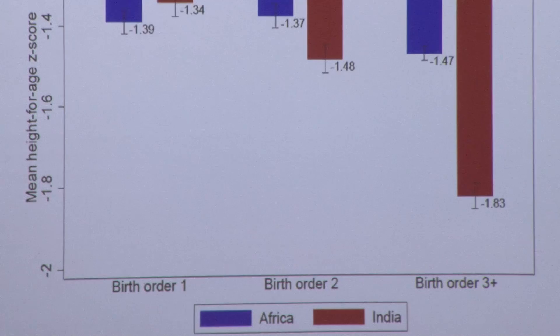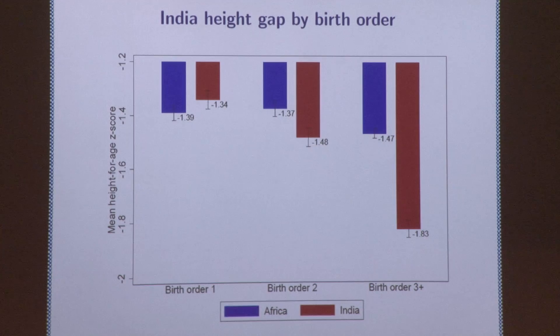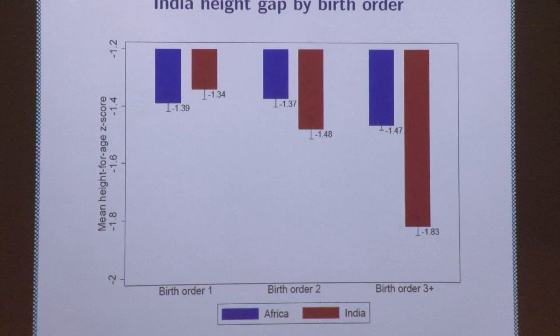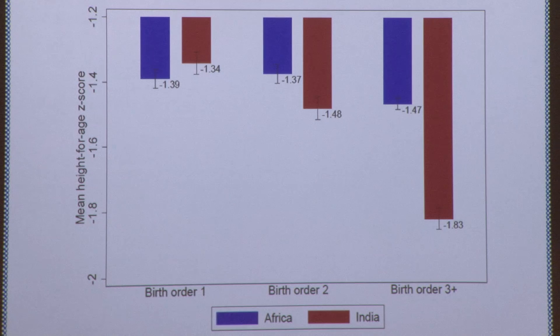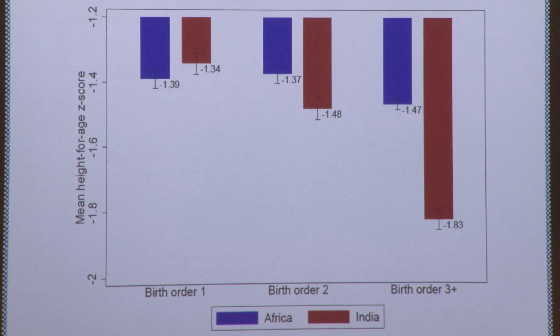This graph is, I think, at least half the contribution of the paper. A big bulk of the paper is trying to kill this graph because it surprised us, but it's a pretty robust finding. There's a very steep gradient in the gap between the height of Indian kids and African kids. Looking at first births — red is India, blue is Africa — all these heights are negative, but Indian first-born kids are actually taller than African first-born kids. That difference is statistically significant. Once you go to second births, you start to see the Indian height gap emerge — Indian kids are now shorter than African kids — and when you get to third and higher births, the gap is even bigger.